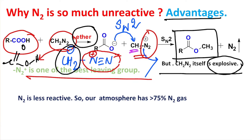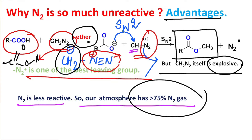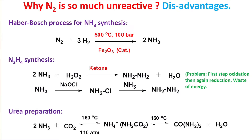Since N₂ is such a good leaving group, diazomethane is very difficult to store — you need to store it in a freezer, and if you heat it, it may undergo explosion. On the other hand, another advantage is that since nitrogen is less reactive, our atmosphere has 75% nitrogen gas. If this nitrogen vanished, everything would be oxygen, our lungs would be destroyed, and organic material would burn — so nature has created a sustainable balance through nitrogen's low reactivity.